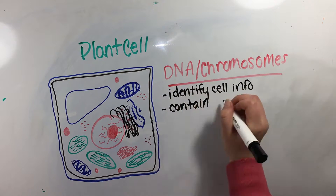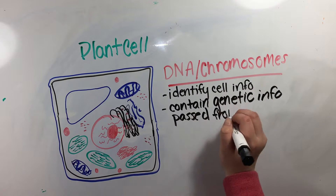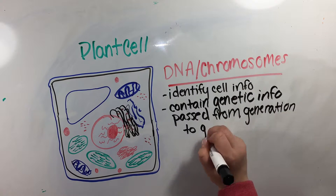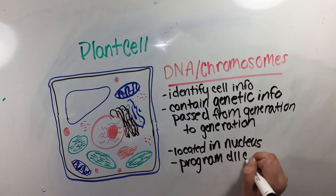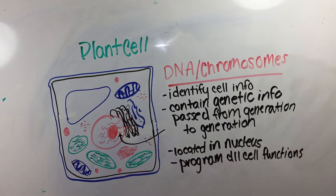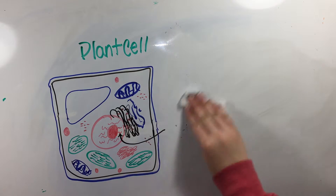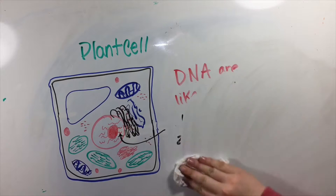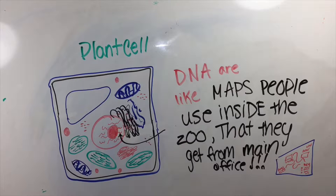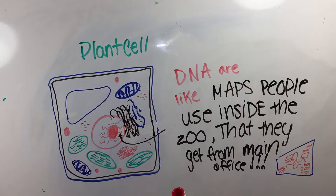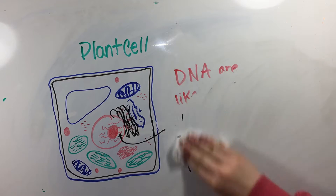Chromosomes, or DNA, are important information that identify a cell. They contain genetic information that is passed from one generation of cells to the next, and this DNA lies within the nucleus. A map of the zoo is like DNA, for the reason that it holds important information on the location and design of the zoo to help one familiarize themselves with their surroundings, and is distributed to many visitors.